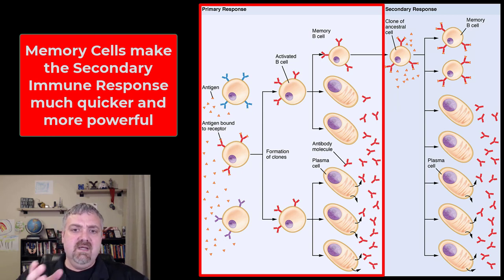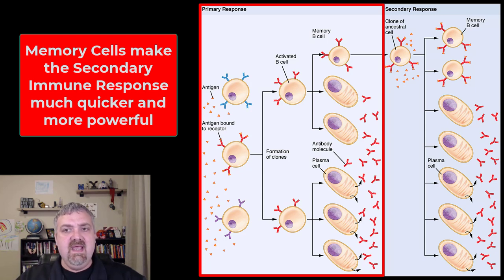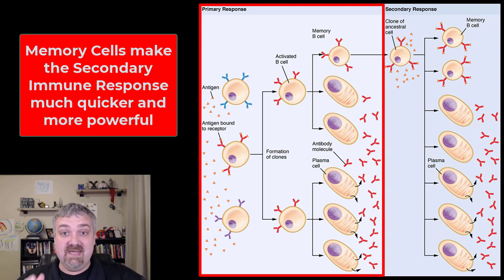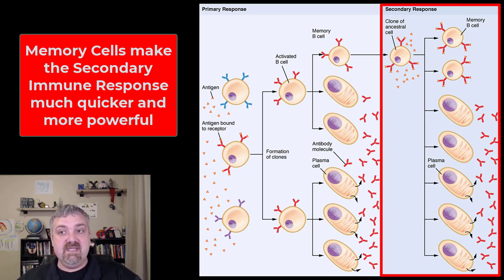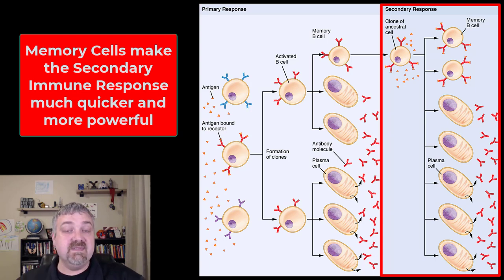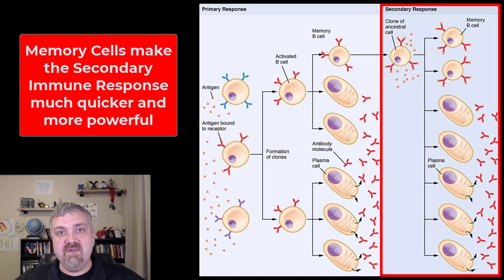As you see on the left hand side, during the primary immune response, the B cells need to be activated and then become memory cells and plasma cells that make antibodies — that process can take up to 10 to 14 days. In the secondary immune response, memory cells have waited around so they can immediately start producing plasma cells and antibodies as soon as they receive that signal. This is why the secondary immune response is much quicker and also more powerful.